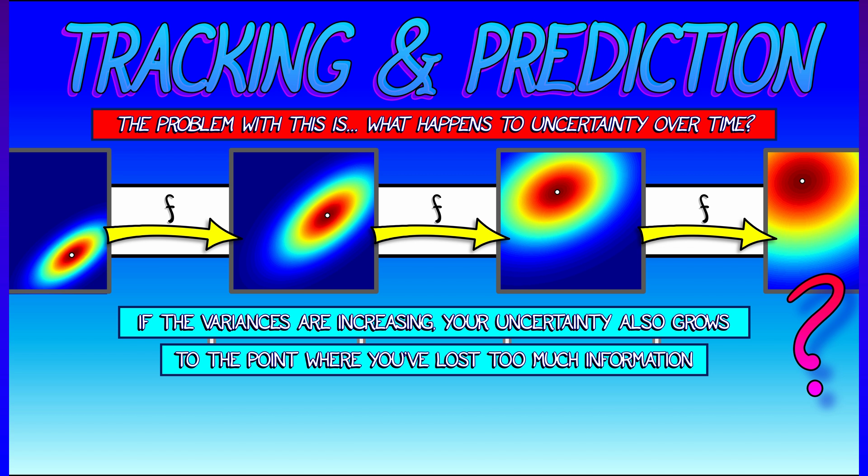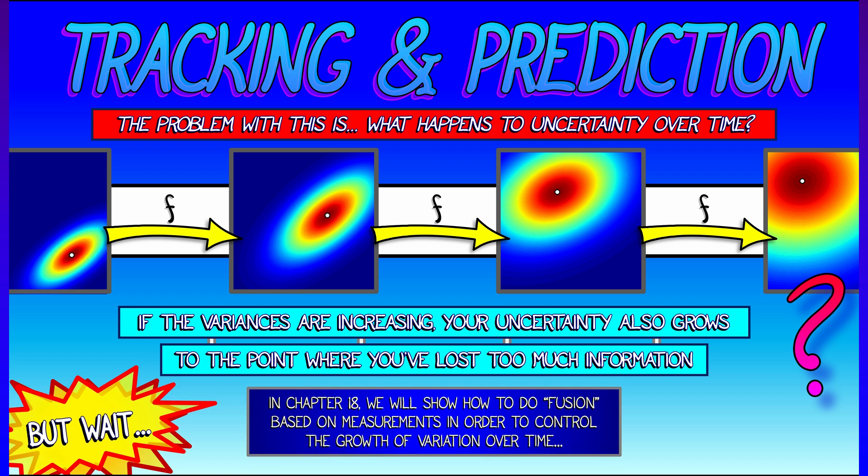So what do we do about that? Well, wait. In a later chapter, we're going to see how to do something called fusion, which is based on getting updated measurements to your state. And this is going to help us control the growth of uncertainty over time. But we need a little something more before we can do that. And what we need is some more math.